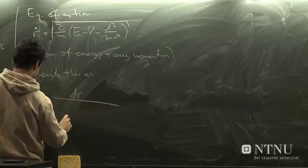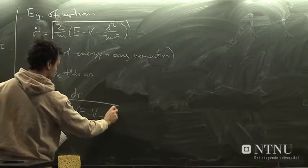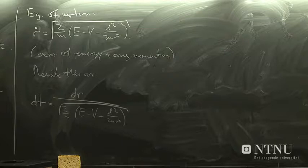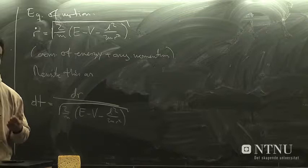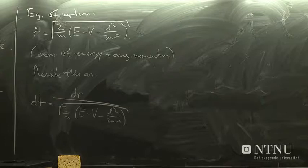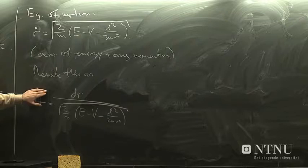There are two ingredients here, conservation of energy and conservation of angular momentum. We can rewrite this in a form which is more suitable for integration. Now, the particle moving in this potential is in general characterized by two generalized coordinates, r and theta.